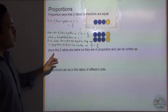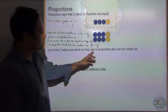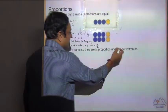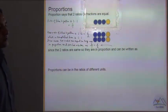Since the two ratios are the same, they are in proportion and can be written as 3 by 1 is equal to 6 by 2.